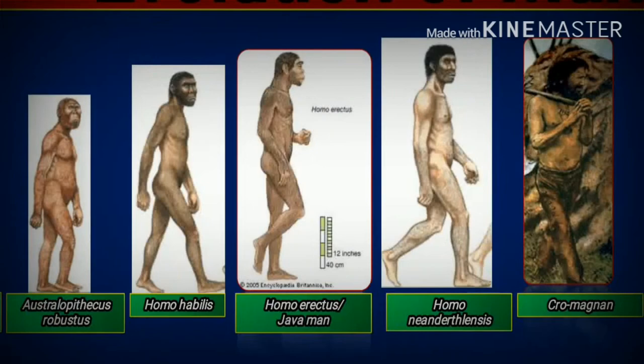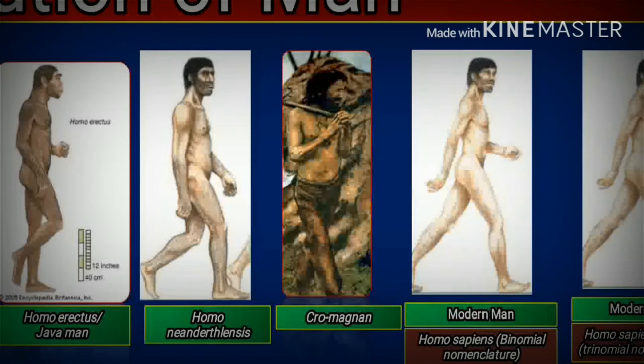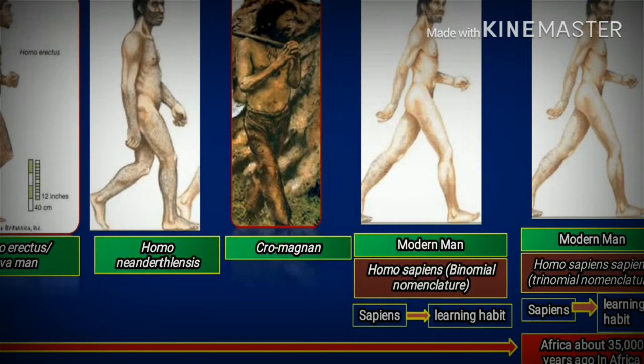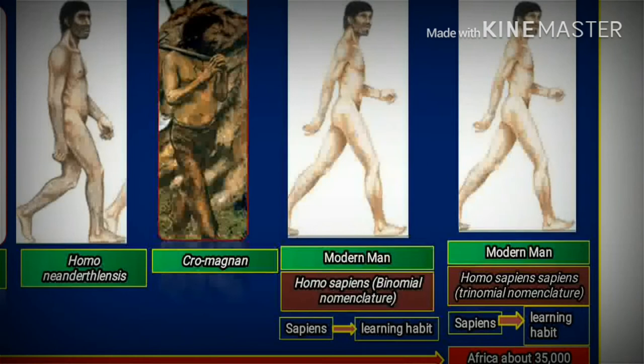Then Homo neanderthalensis has developed. Then Cro-Magnon. After Cro-Magnon, finally the modern man is developed. Modern man is called Homo sapiens — named Homo sapiens scientifically according to binomial nomenclature, due to its learning habit. According to trinomial nomenclature, the name of modern man has been changed to Homo sapiens sapiens.